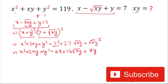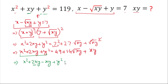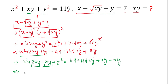In equation 1 we have x² + xy + y² on the left hand side. To make this expression match equation 1, we subtract xy from both sides. So we write x² + 2xy − xy + y² = 49 + 14√(xy) + xy − xy. Simplifying: x² + xy + y² = 49 + 14√(xy), since the xy terms on the right cancel out.